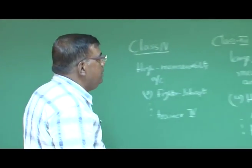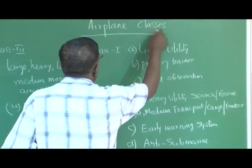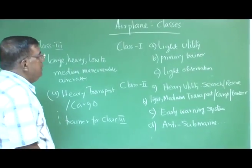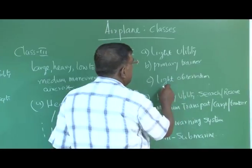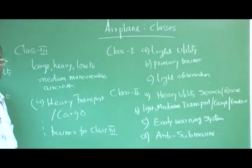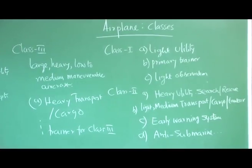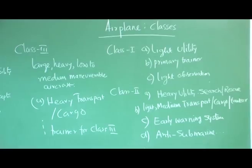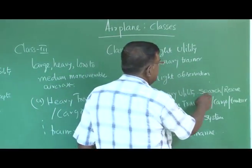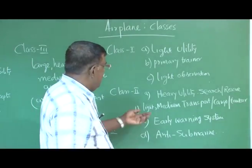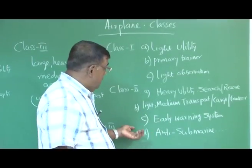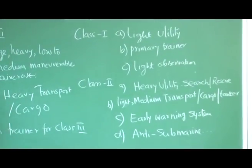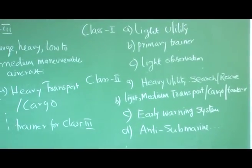First, they have defined airplane classes. In class 1, it includes light utility aircraft, primary trainer, and light observation aircraft. All those aircraft which come under light utility aircraft category are classified as class 1. In class 2, you have heavy utility like search and rescue, light medium transport, cargo tankers, early warning systems, anti-submarine, and many other types of aircraft summarized in class 2.